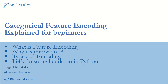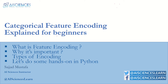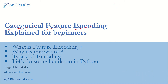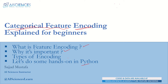Hello guys, welcome back to AI Sciences. I am Sajjad. Today we are going to learn categorical feature encoding. We are going to learn two things: what is encoding and what is categorical. We'll learn what is feature encoding and why it's important, what are the types of encoding, and then we'll do some hands-on practice in Python.